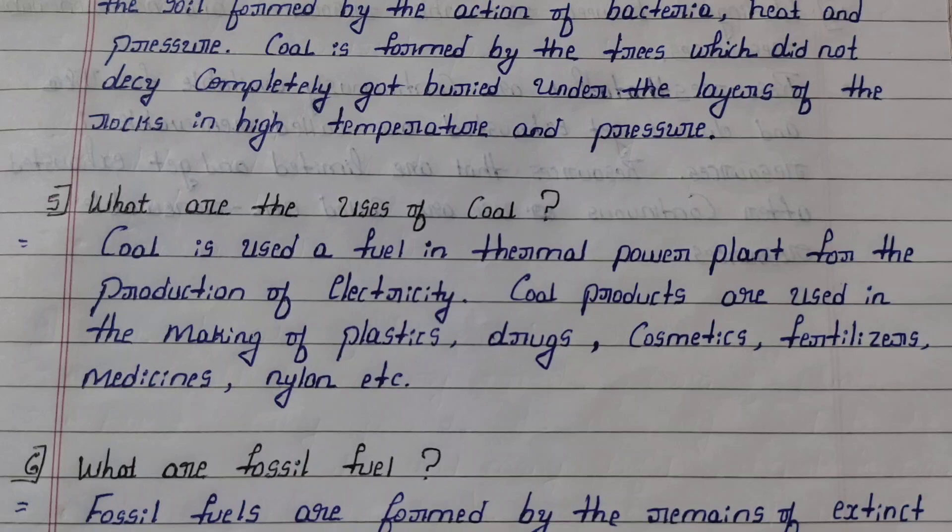Fifth question: What are the uses of coal? Answer: Coal is used as a fuel in thermal power plants for the production of electricity. Coal products are used in the making of plastics, drugs, cosmetics, fertilizers, medicines, nylon, etc.